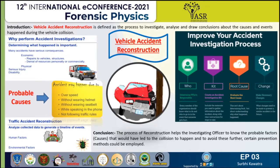Factors due to which an accident may occur include human factors, physical factors, and environmental factors. Human factors include distractions at the time of driving, a driver's health condition, or the driver being under the impact of alcohol or drugs. Physical factors include the type of vehicle, extra fitment, last service, headlights, and brake conditions. Environmental factors include weather conditions, dirt on the windshield, background noise at the time of driving, and so on.